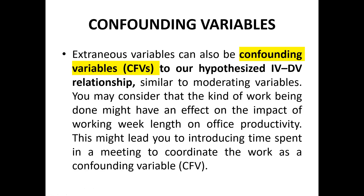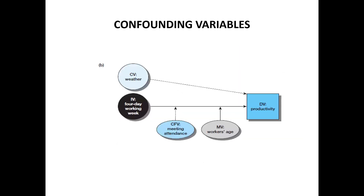To recap: it is very important to identify the variables in your research. Those variables can be different — it can be an independent and dependent variable. First, you need to identify your independent and dependent variable. Then you need to see in the literature whether there is a moderating variable that affects that relationship. If there is an extraneous variable, those variables affect the relationship but generally we do not include them in the study because they do not have that much impact. But if you want to include them, you can include extraneous variables in the form of a control variable or a confounding variable.